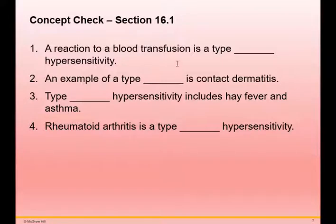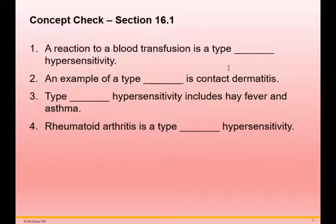Concept check questions for section 16.1: A reaction to a blood transfusion is a type 2 hypersensitivity. Contact dermatitis is an example of type 4 hypersensitivity — like poison ivy or poison oak. Hay fever and asthma are type 1, the immediate reaction. Rheumatoid arthritis is a type 3 hypersensitivity, where immune complexes settle into the joints and result in the condition.